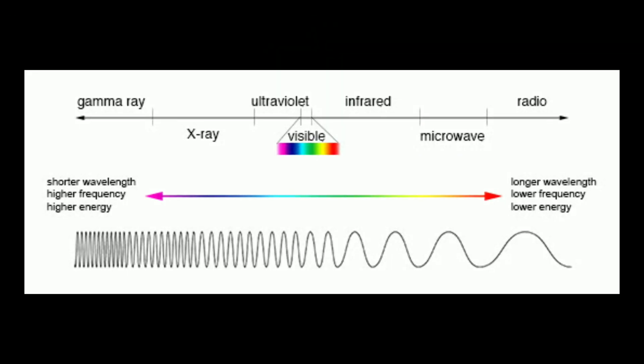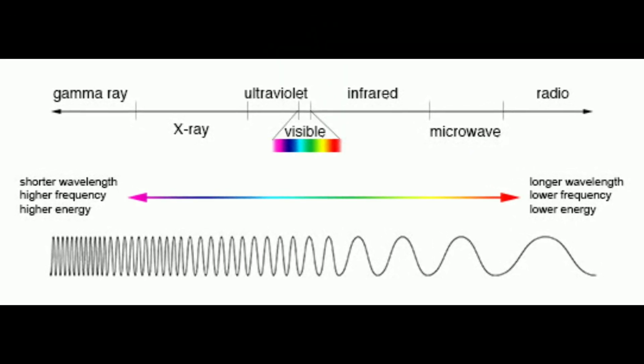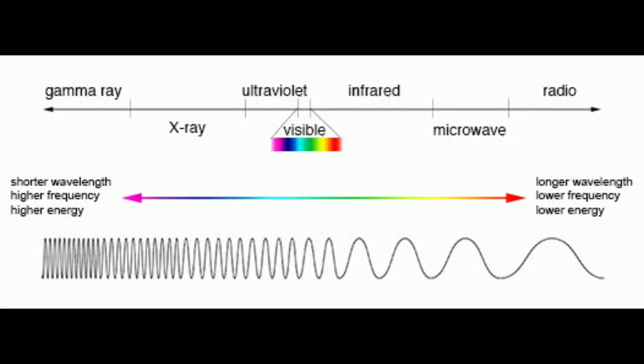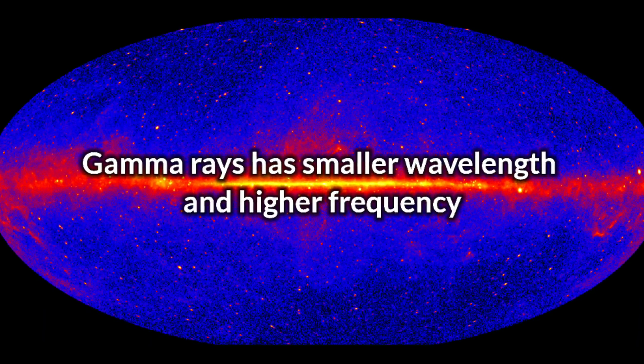Gamma rays have a very low wavelength. It is a very low wavelength.